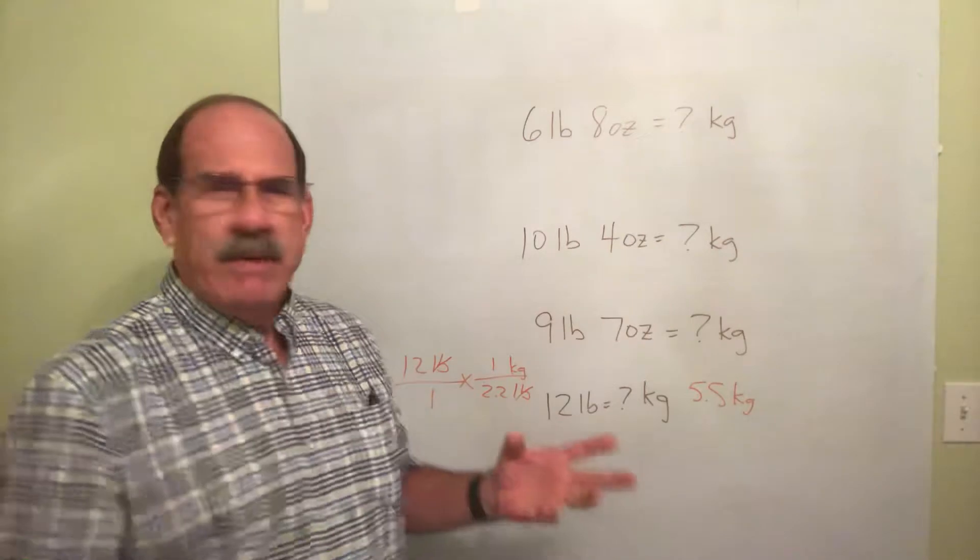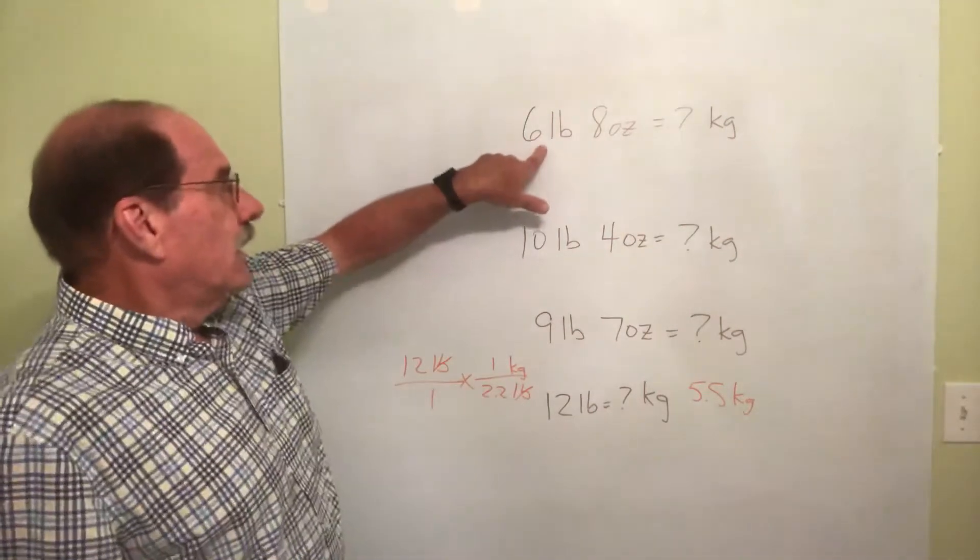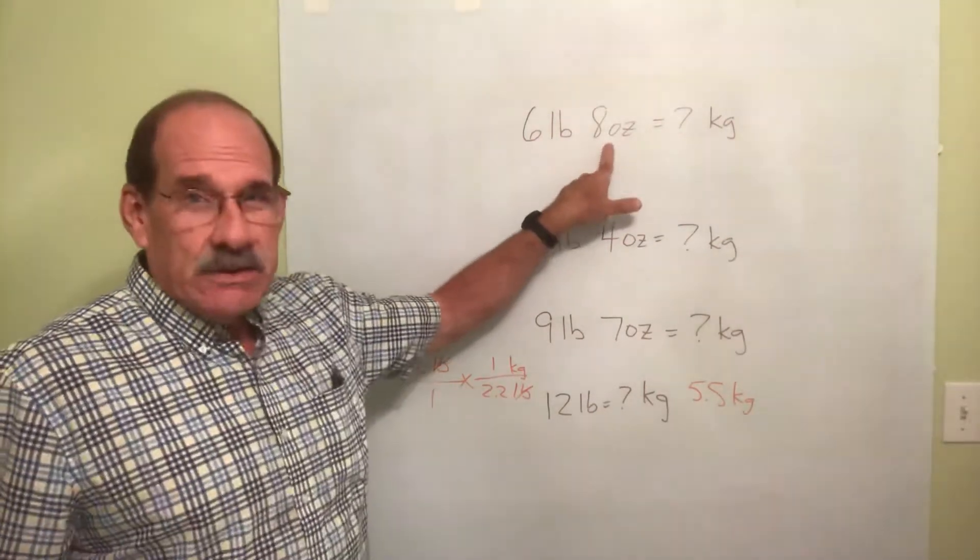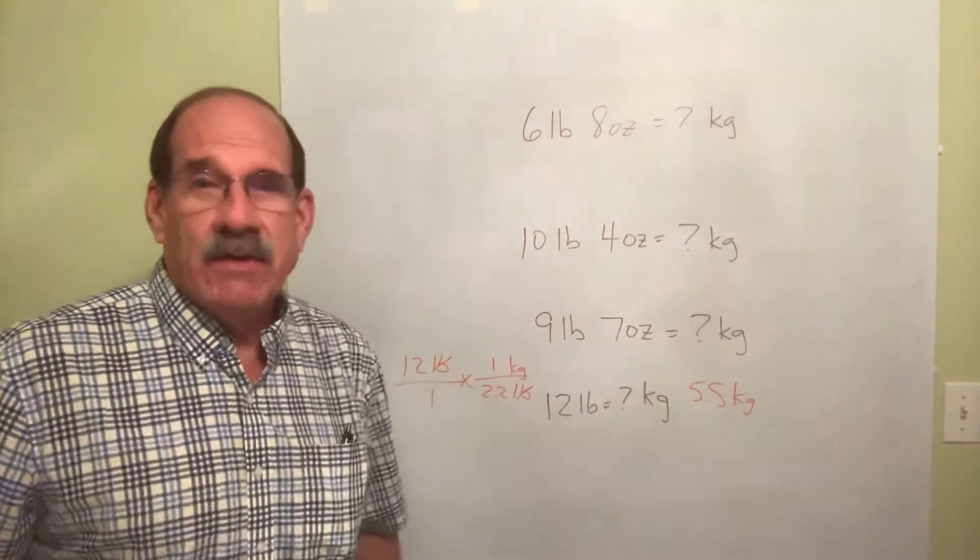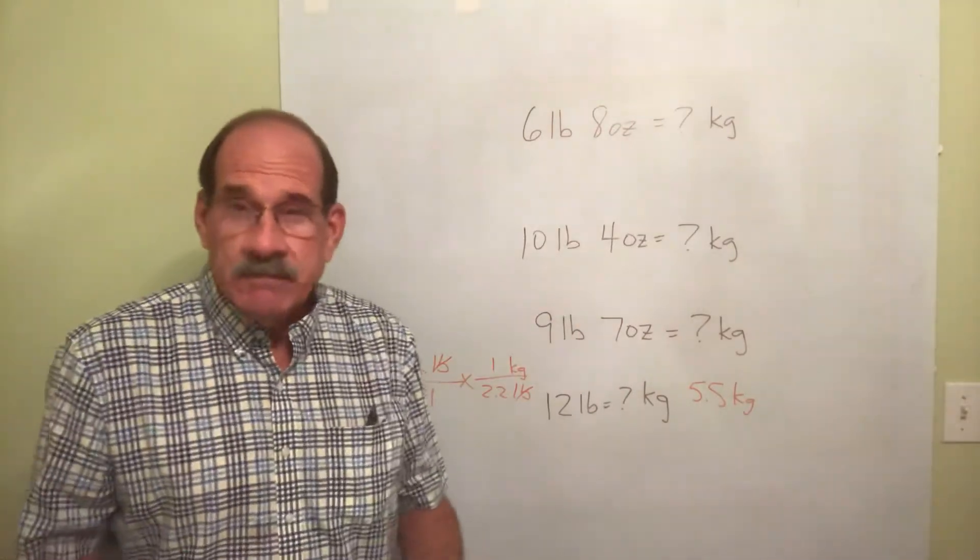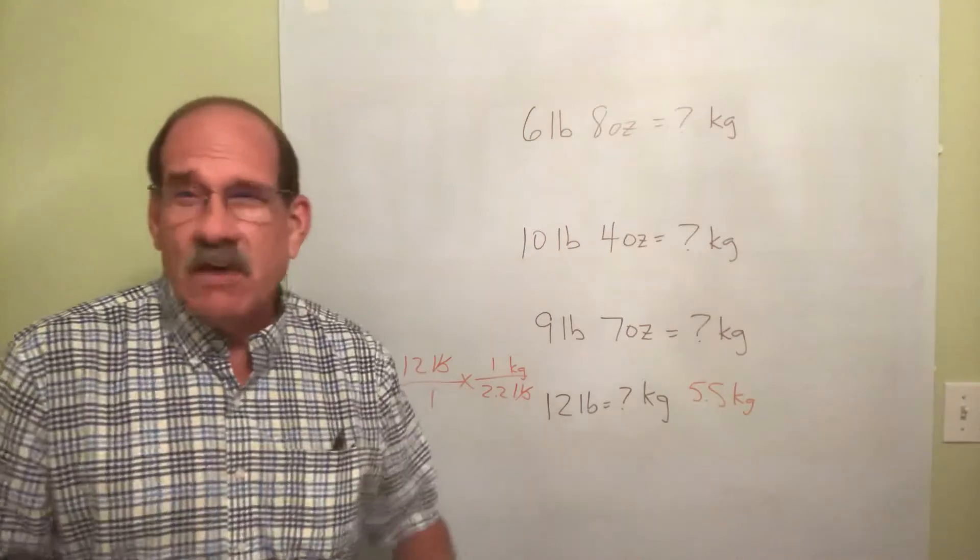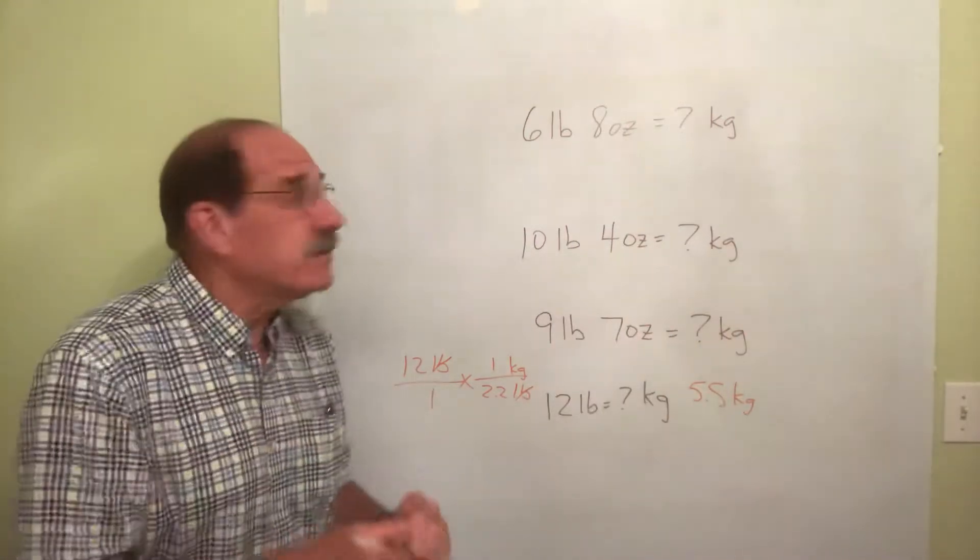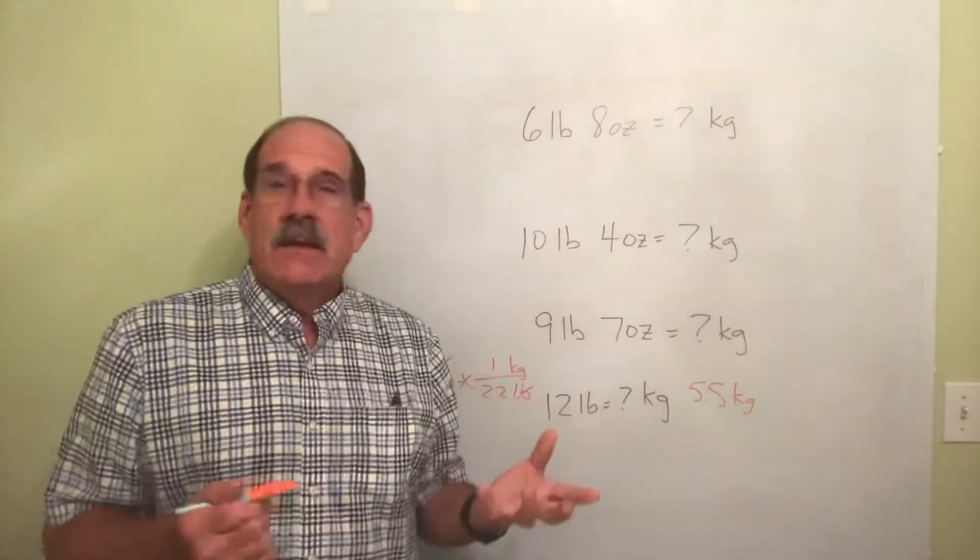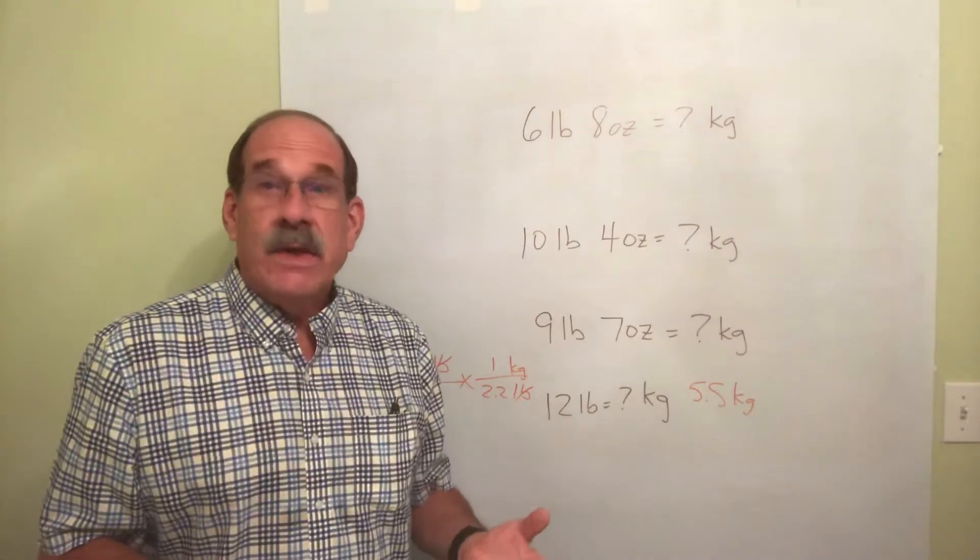But now what about something like this? Little kiddo weighs 6 pounds, 8 ounces. How many kilograms is that? Now I said earlier, in the previous video or one some time back, how many ounces are there in a pound? Why there's 16.